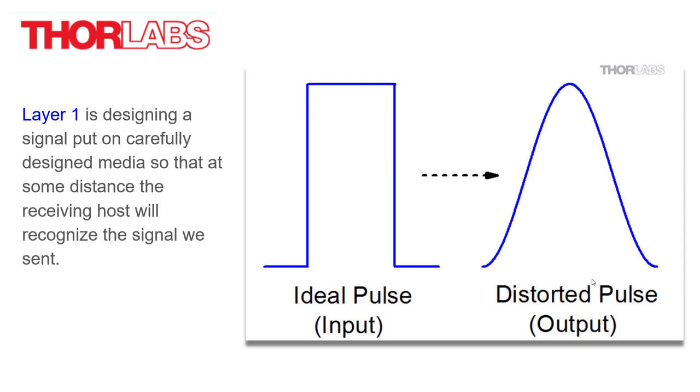In the real world, signals are distorted by connectors, interference, reflection, signal loss, dispersion, and just a long list of signal characteristics that impact the quality of the signal. As it moves down any type of media, we can start with this ideal pulse. And by the time it gets 200 kilometers away, it looks like this on the right.